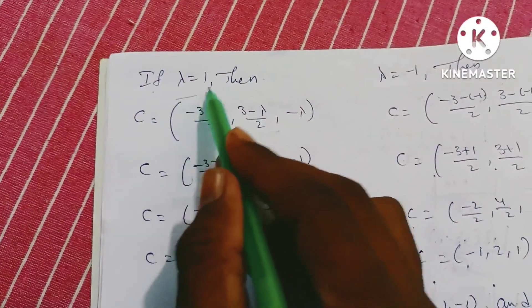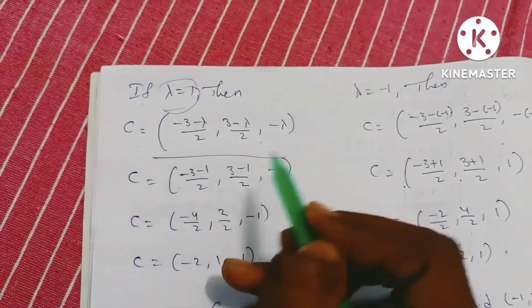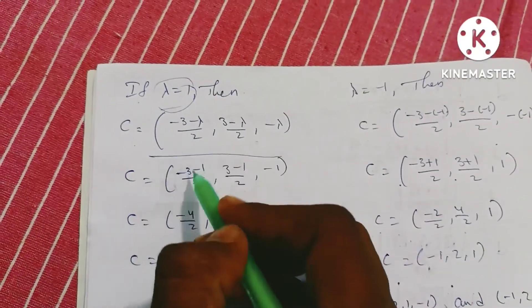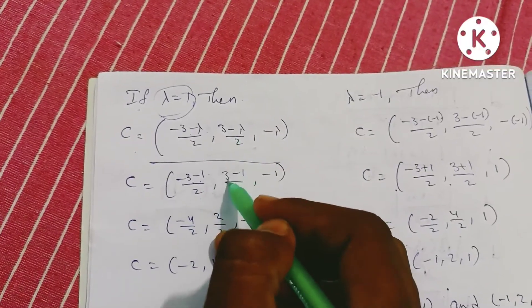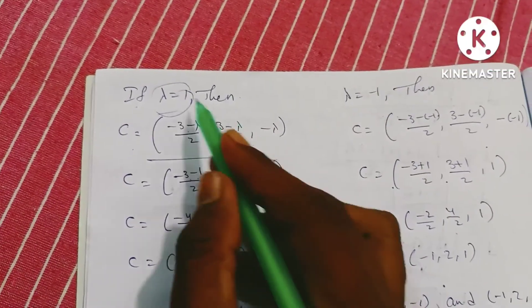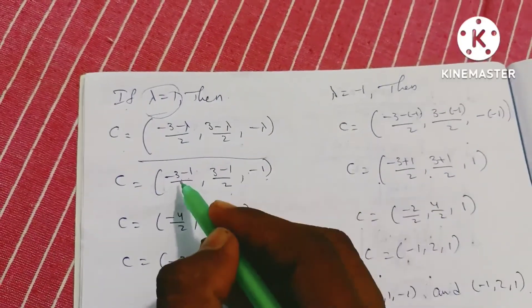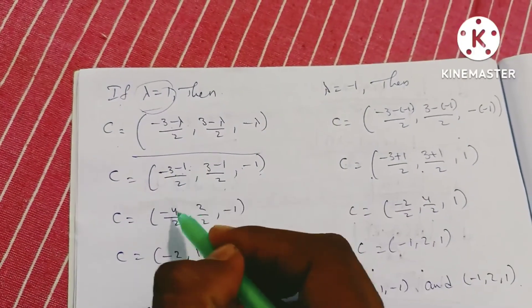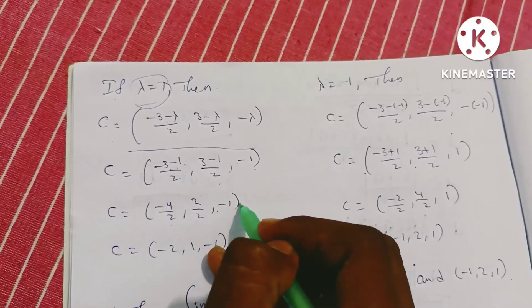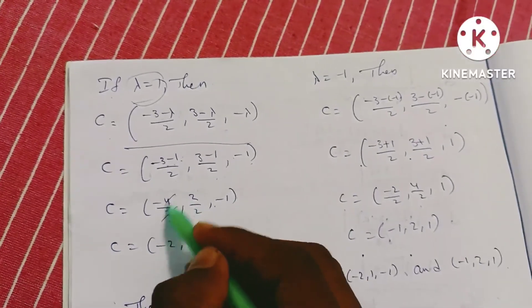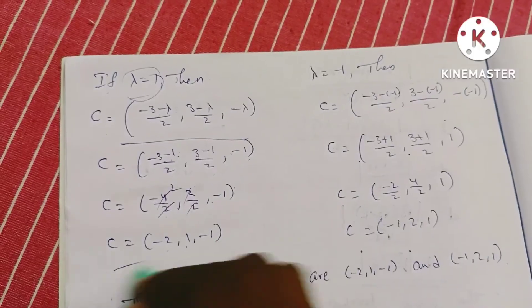When lambda equals plus 1, the center equals: minus (3 plus 1) by 2, comma (3 minus 1) by 2, comma minus 1. That gives minus 4 by 2, comma 2 by 2, comma minus 1, which equals minus 2, comma 1, comma minus 1.